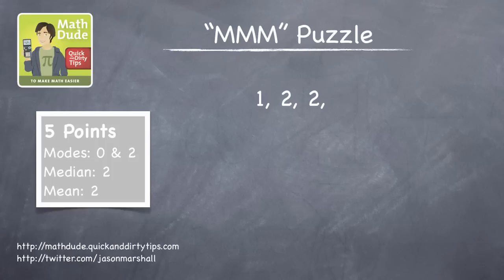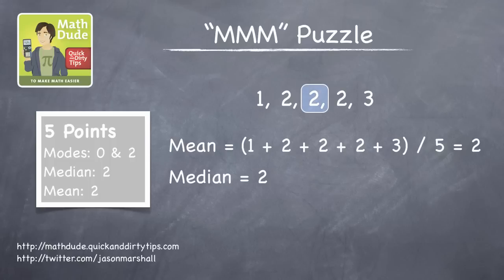Let's look at the list of numbers 1, 2, 2, 2, 3. The mean is the sum of the list divided by the number of elements in the list. In this case, it's 2. The median is the middle number in the list when we write it in order from smallest to largest, and the mode is the number that occurs most frequently. In this case, the median and mode are both 2.